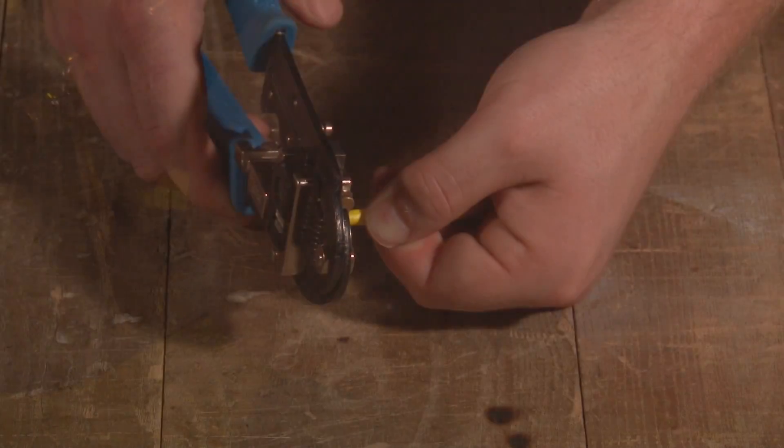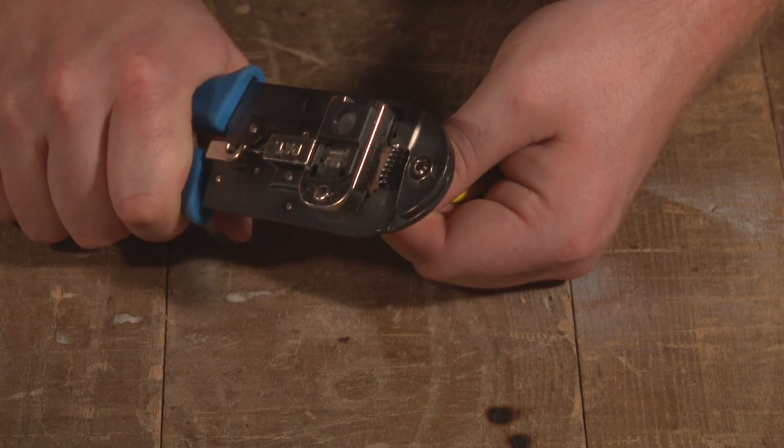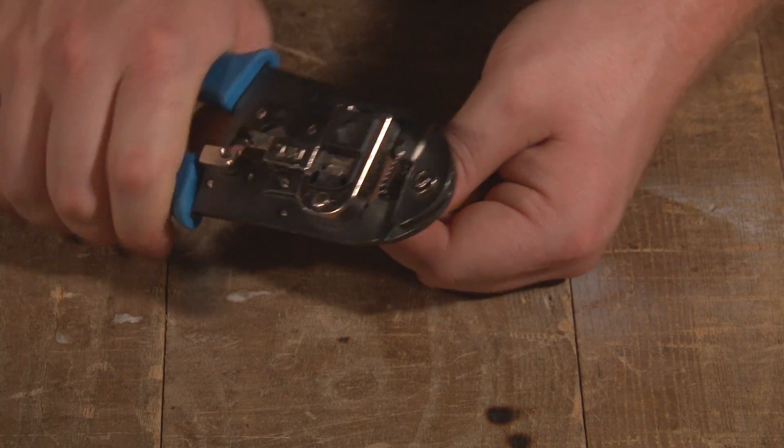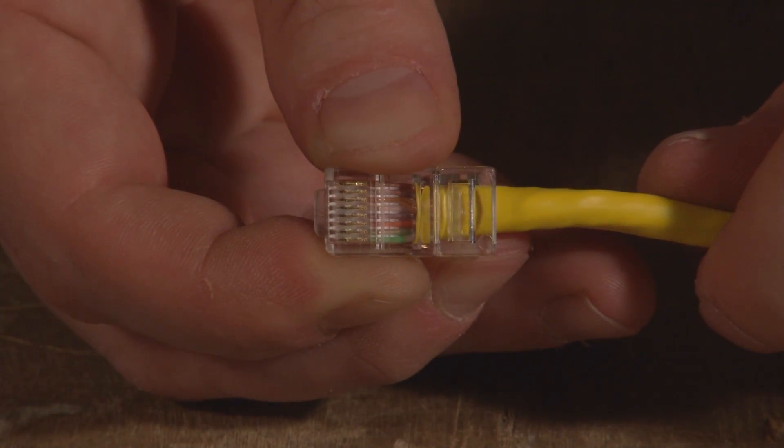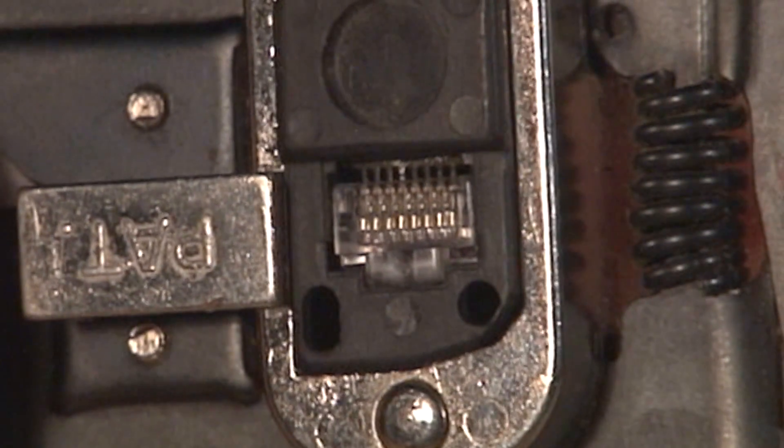Without letting go of the plastic jacket, crimp the cable. Visually inspect the RJ45 jack. Each pin should be pressed into the individual wire.